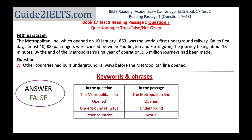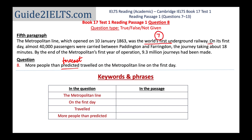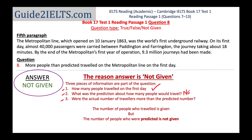On to the eighth question. It again mentions 'metropolitan line' and 'first day.' In the passage, just after where we found the seventh answer, we see 'first day' in the very next sentence. Reading the question carefully: 'More people than predicted traveled on the metropolitan line on the first day.' From the passage, we have the number of passengers on the first day — almost 40,000 — but there is no prediction about how many were expected to travel. Because part of the information asked is not given, the answer is not given.